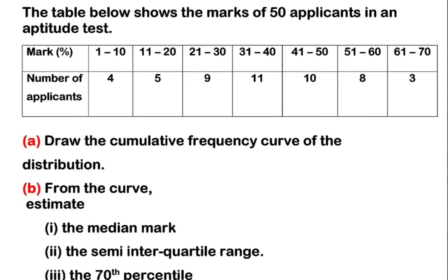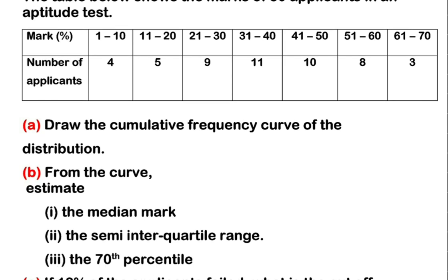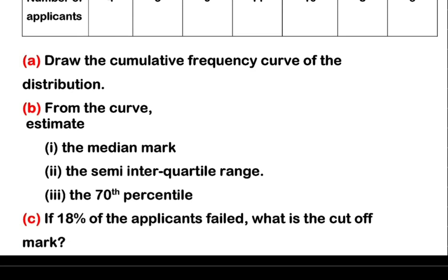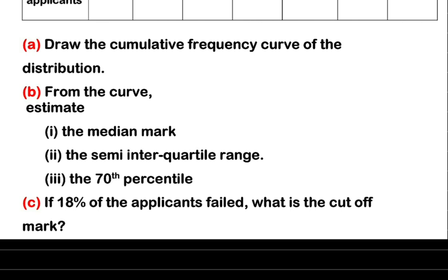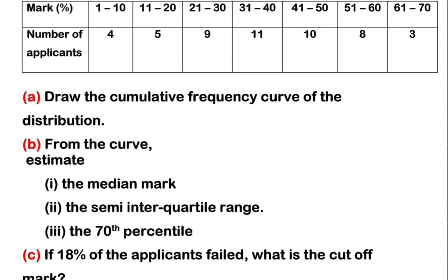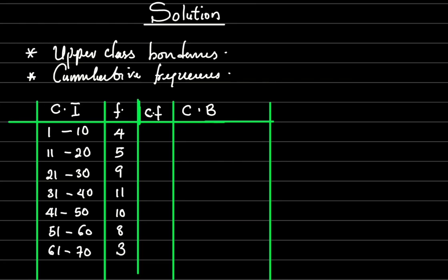Welcome to class. I'll be solving a very good question here under statistics. I'll be teaching you how to draw an ogive — that is, a cumulative frequency curve. That is the part A of the question. The part B is to use the curve to estimate the median mark, the semi-interquartile range, and the 70th percentile. Then we have part C. Please follow me carefully.